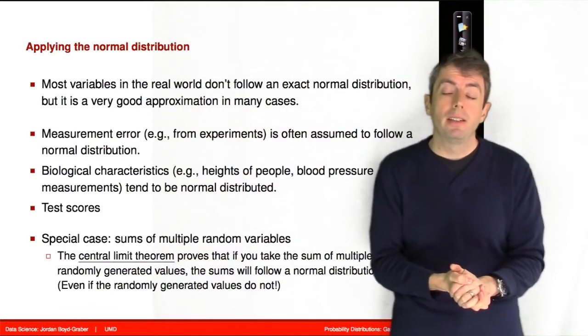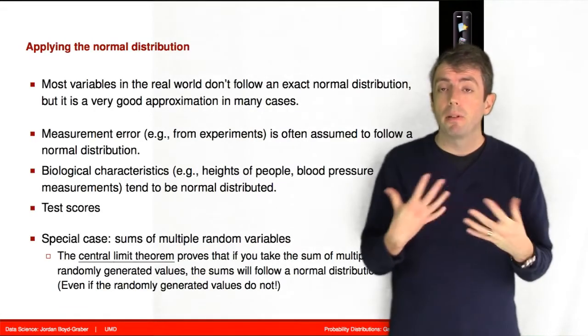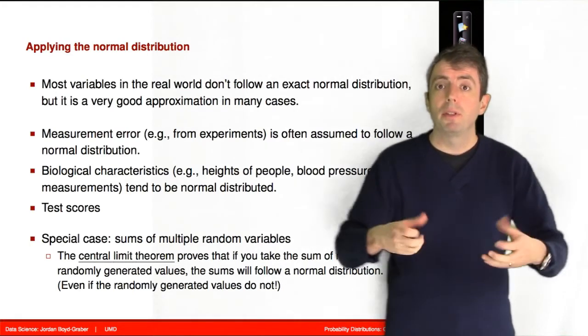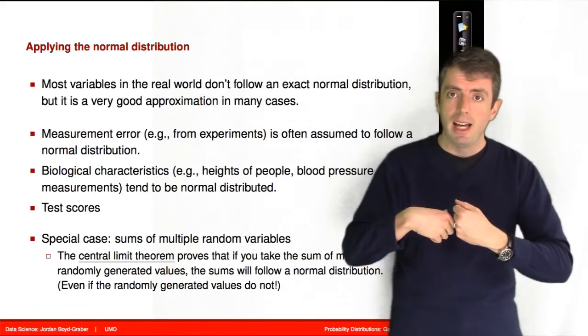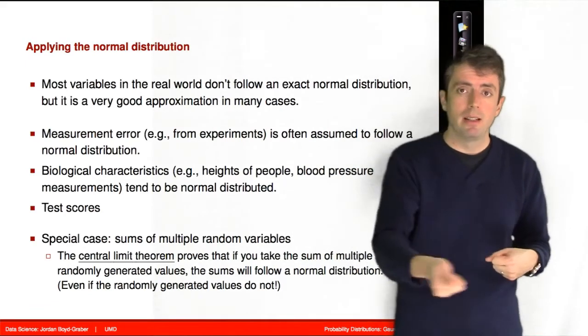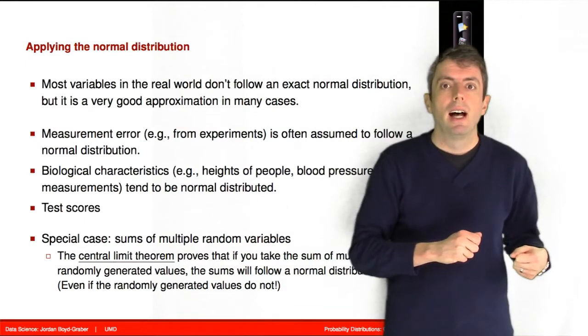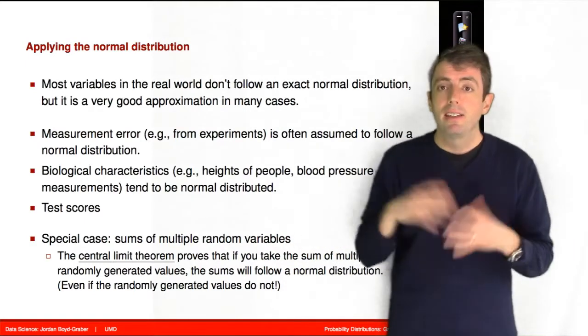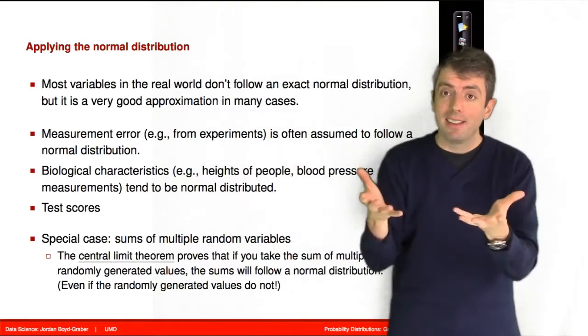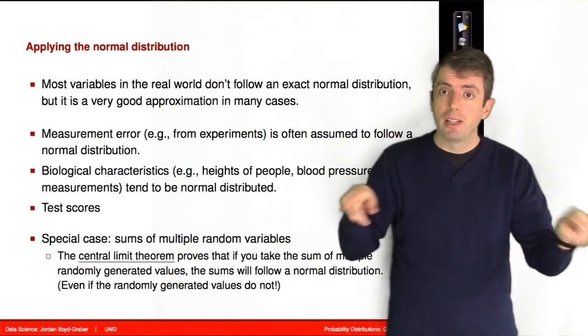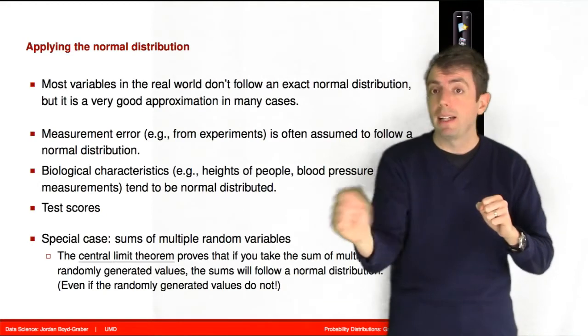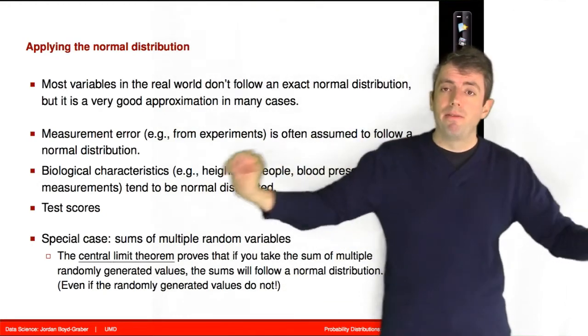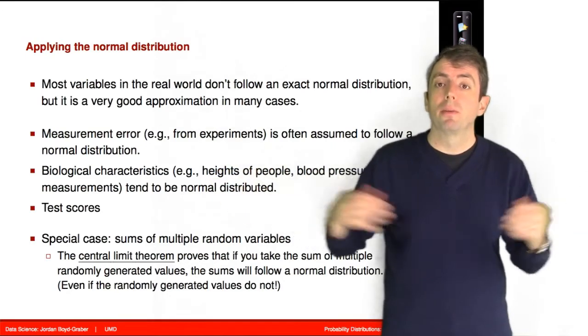The normal distribution is so widely used because it approximates many things that we see in the real world. For example, if you give a bunch of students a measuring tape and you ask them to measure how long the room is, you will get measurements that are very close to a normal distribution. This is because measurement error has the property that we saw in the bell-shaped curve that most people will be very close to the right answer, whatever it is, and the probability of getting a very wrong answer is relatively low.